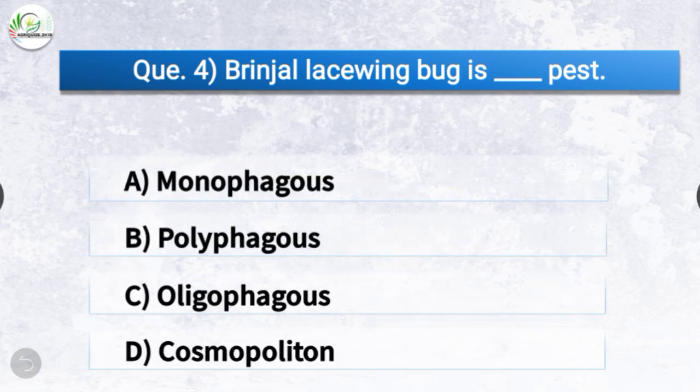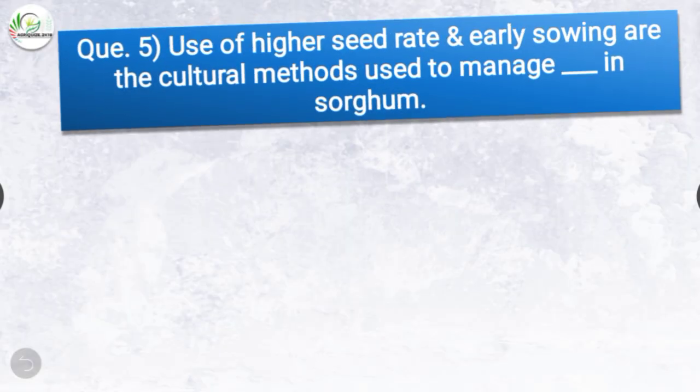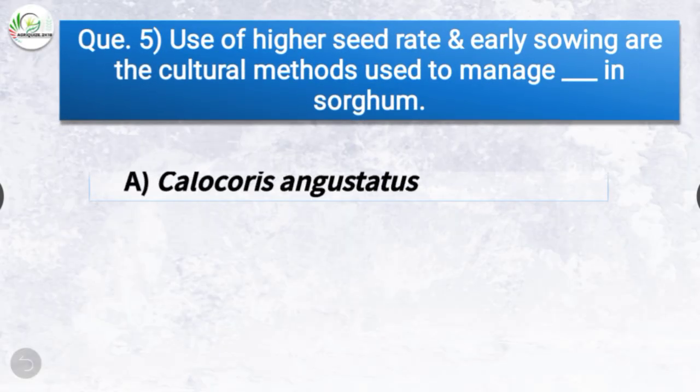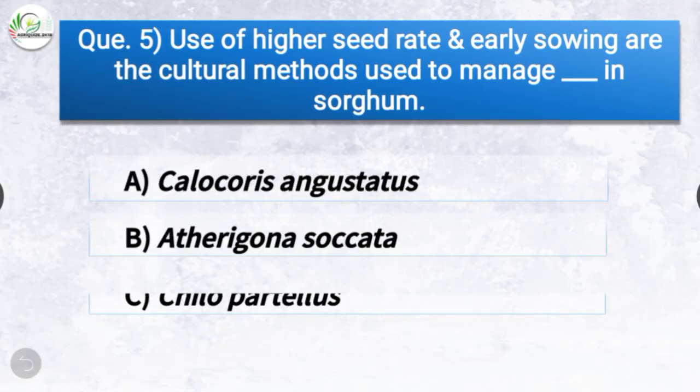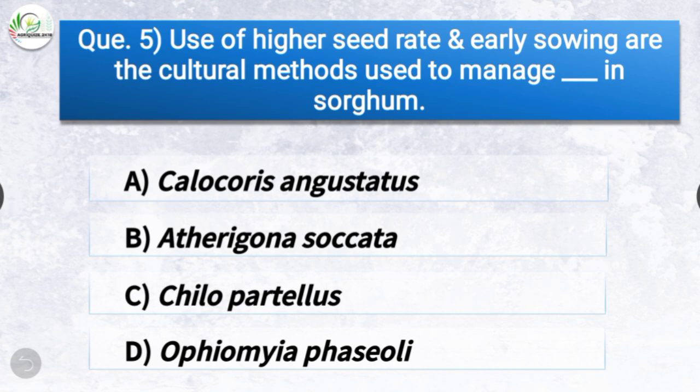Question number four: Brinjal lace wing bug is a dash pest. The options are monophagous, polyphagous, oligophagous, or cosmopolitan. The correct answer is option A, monophagous — brinjal lace wing bug is a monophagous pest.